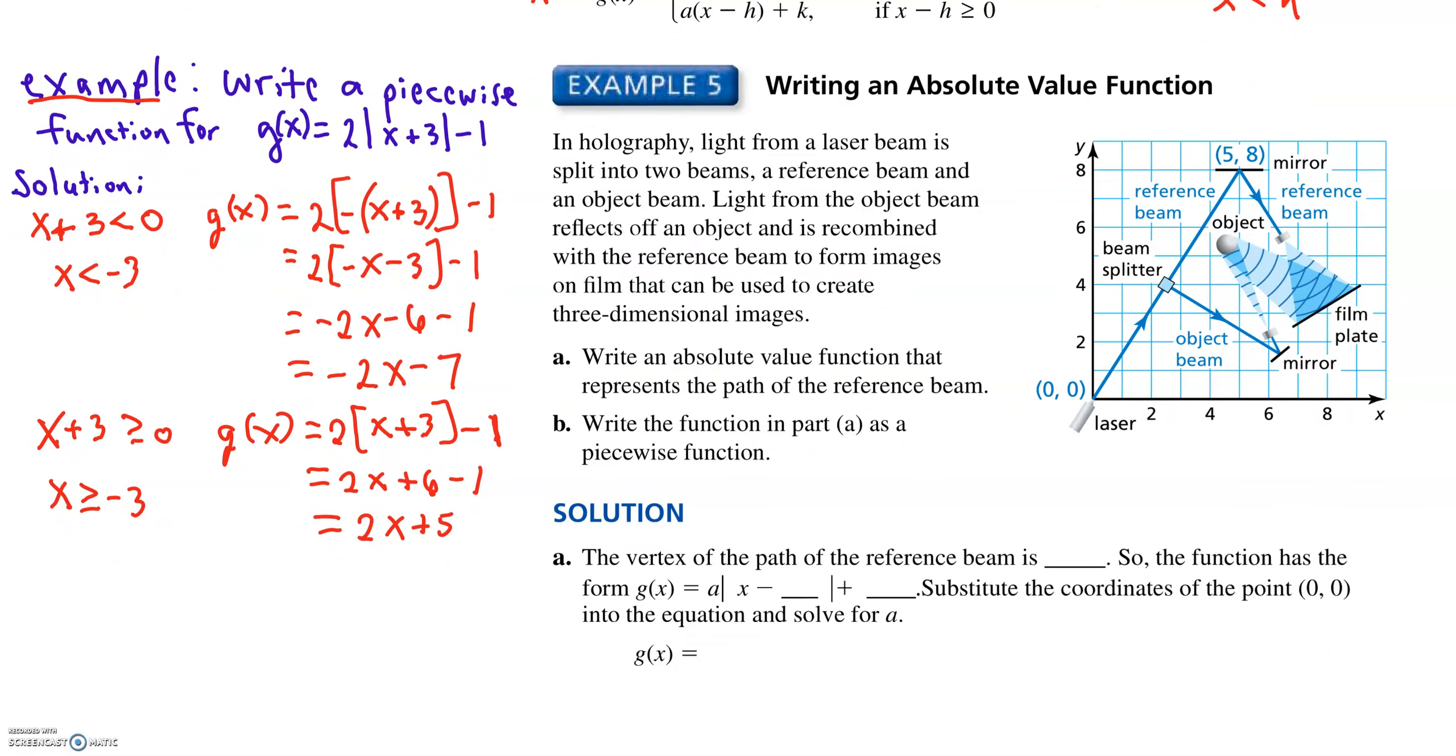So we're going to finish it up by writing out our piecewise definition. g of x equals, it's going to be two pieces, negative 2x minus 7,